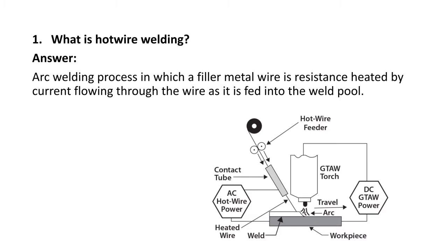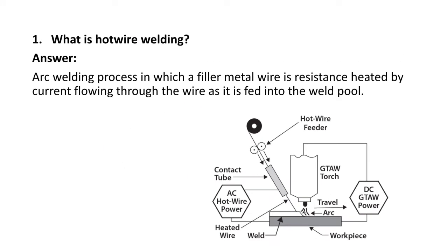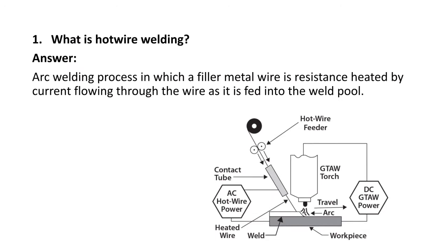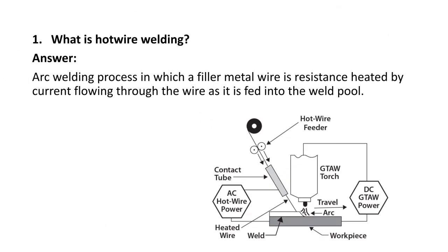Hot wire welding is an arc welding process in which a filler metal wire is resistance heated by a current flowing through the wire as it is fed into the weld pool. The filler material is heated and then supplied to the weld pool. This is why it is called hot wire welding.